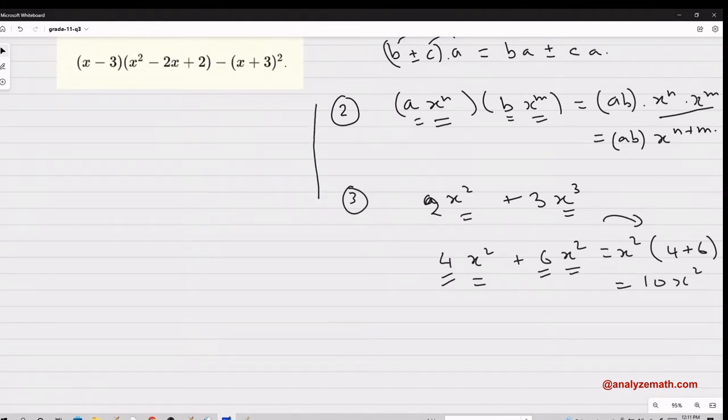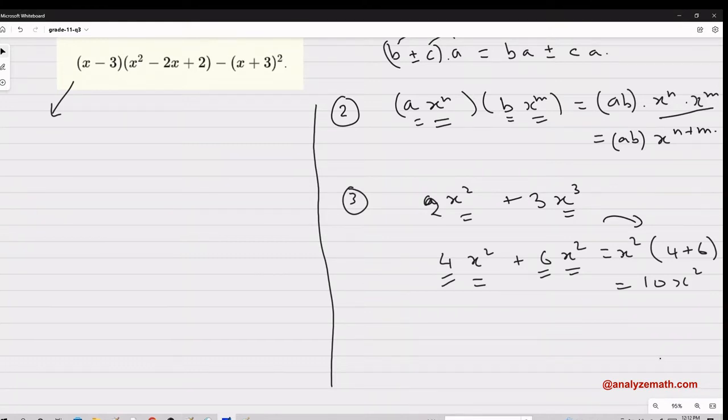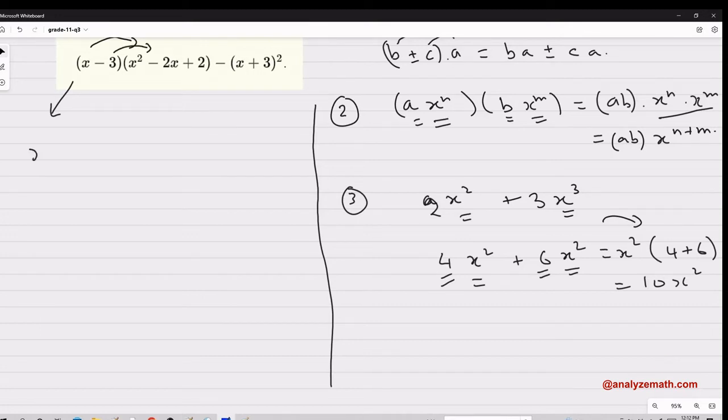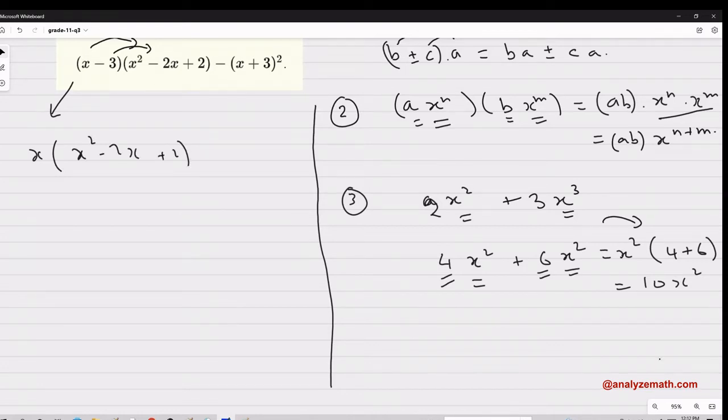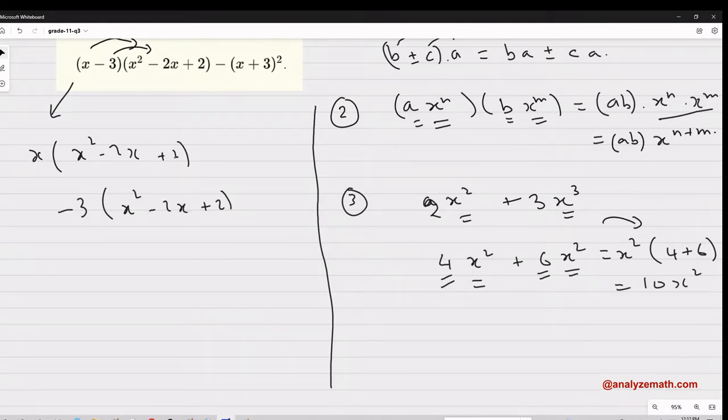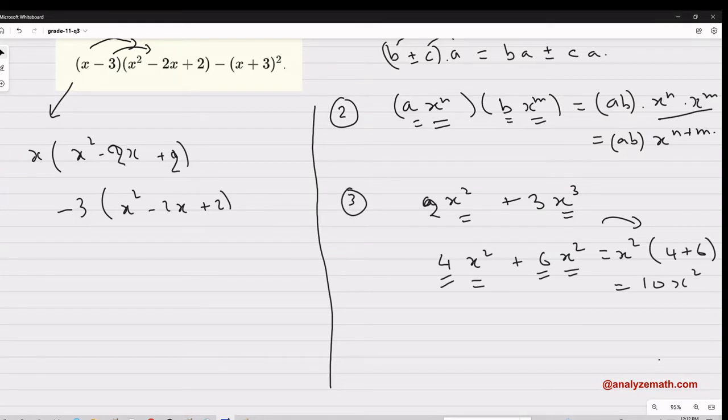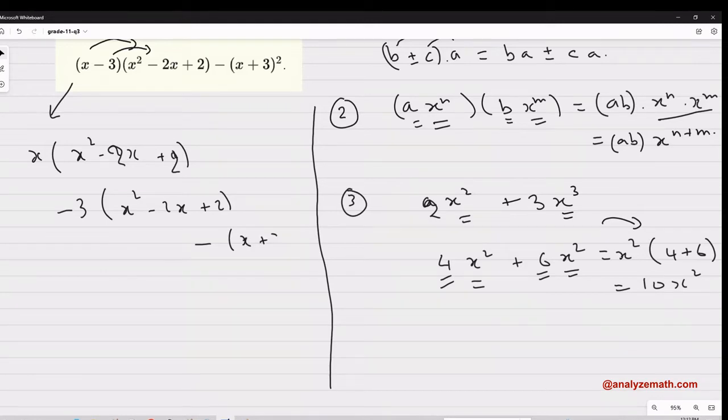Now let's start here. I have (x - 3) multiplied by this expression here. So I can distribute the x on this expression, the negative three on this expression, and I write this as x(x² - 2x + 2) and then minus 3, same thing, (x² - 2x + 2). So what I did, I distributed x on this and three on this, and then the last term minus (x + 3)².